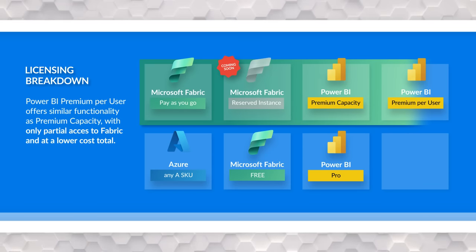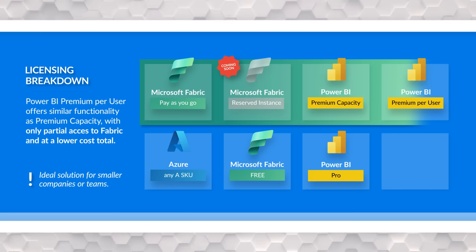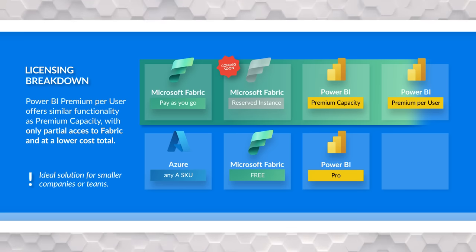Power BI Premium Per User is still available at $20 US a month. This allows you premium capabilities at a reduced cost without needing a Power BI Premium capacity or a Fabric capacity. You can create Power BI content and do items that were labeled as Power BI Premium before, such as deployment pipelines. Power BI Premium Per User is still relevant for scenarios where customers just want to take advantage of Power BI capabilities and not the broader Fabric capabilities — and for small organizations, this could still be really valuable.